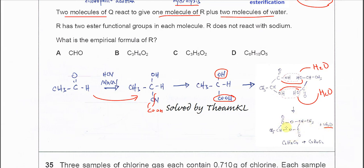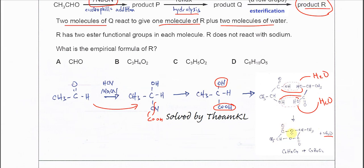Now if we try to count the carbon, oxygen, and hydrogen number, this will be C6H8O4, and the empirical formula is C3H4O2, which is B. That's all, thank you.